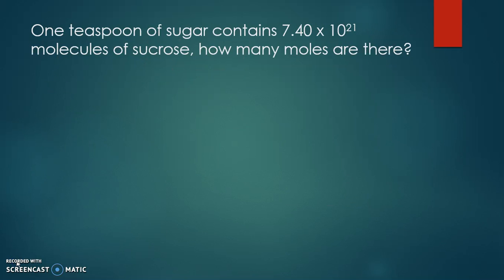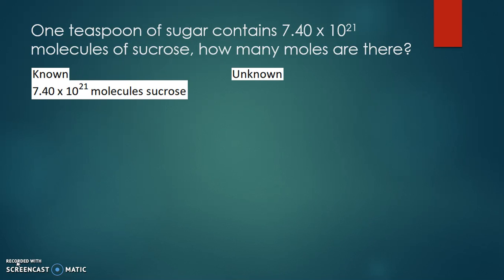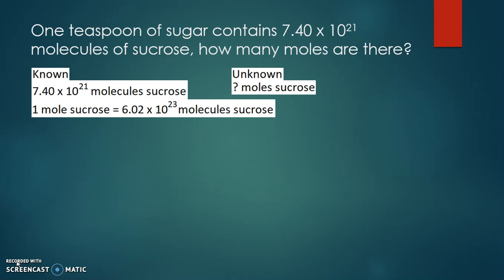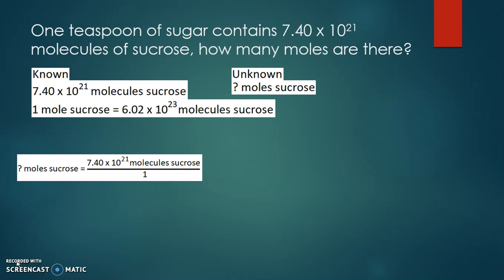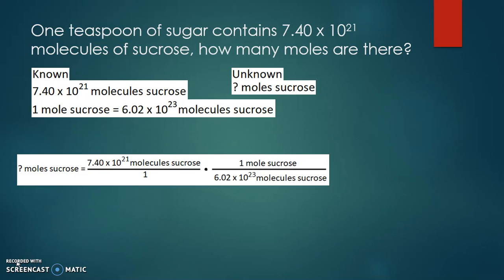Here we have one teaspoon of sugar containing 7.4 times 10 to the 21st molecules of sucrose. How many moles are there? We know we have 7.4 times 10 to the 21st molecules of sucrose and we're trying to find the number of moles. The relationship between molecules and moles is Avogadro's number: since sucrose is a molecular compound, there are 6.02 times 10 to the 23rd molecules of sucrose in one mole of sucrose. We place molecules in the denominator so they cancel out.